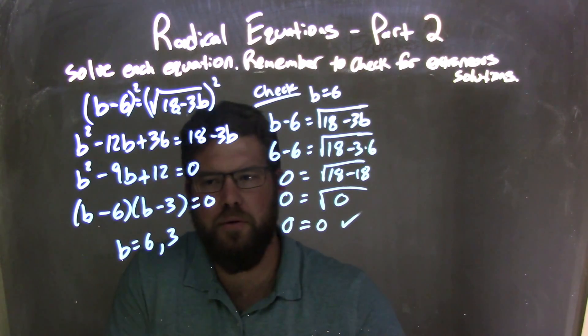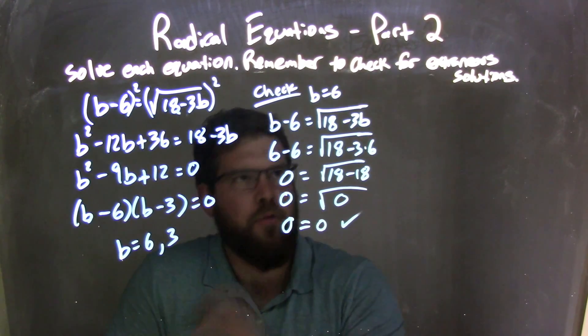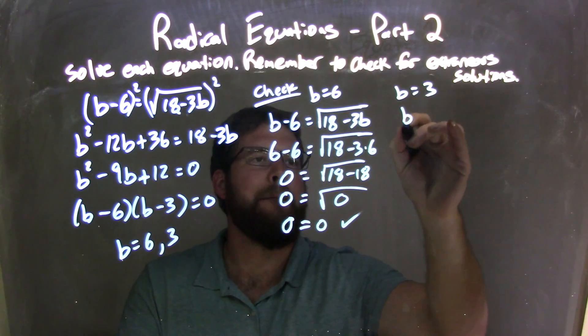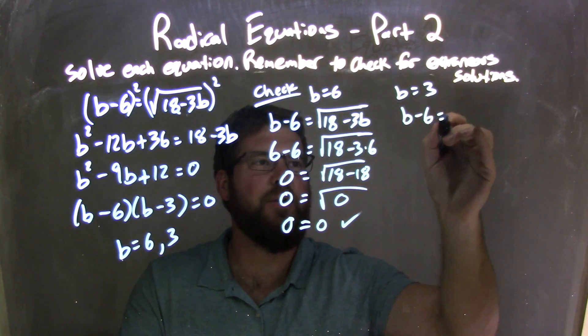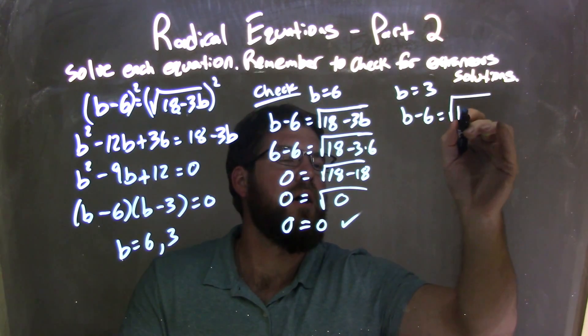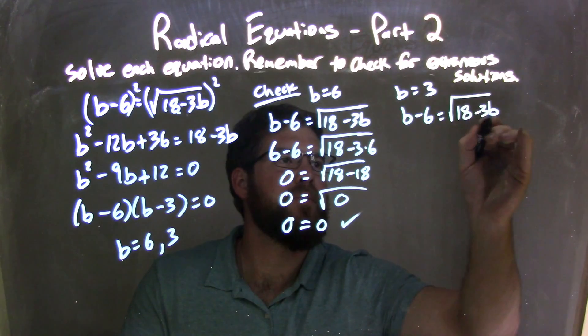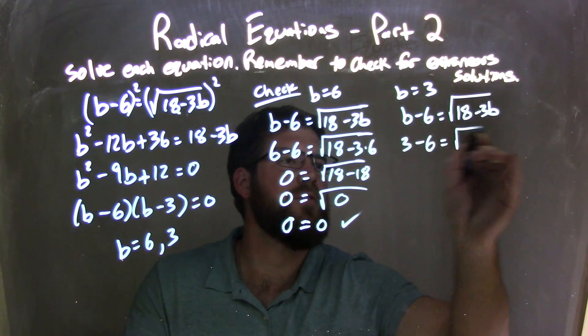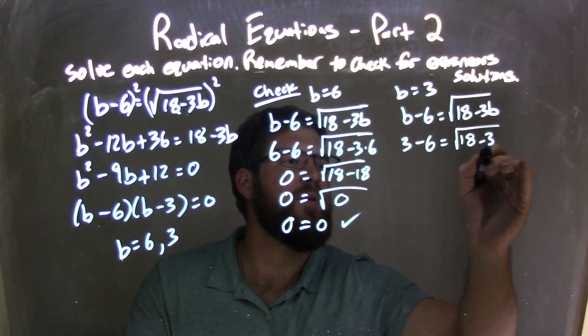But hold your horses here, we gotta check 3, okay? So let's plug 3 into our original equation. b minus 6 equals square root of 18 minus 3b. 3 goes in for b.